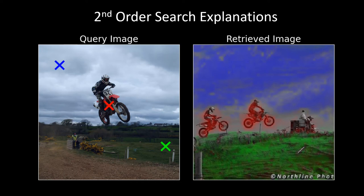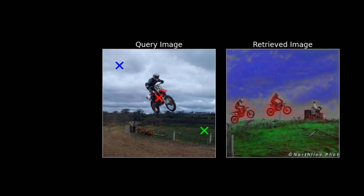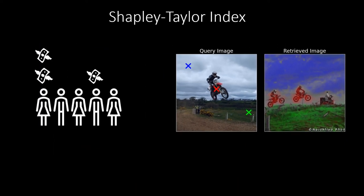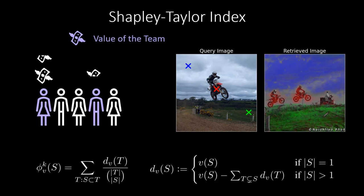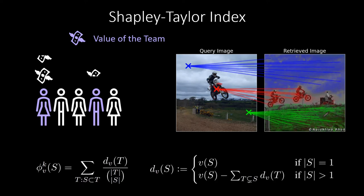We can formalize this notion using the Shapley-Taylor index of cooperative game theory. This generalization of the Shapley value provides a payment not just to employees, but also to every team or coalition of employees. In the context of visual search, this provides a coupling strength between pixels of query and retrieved images.